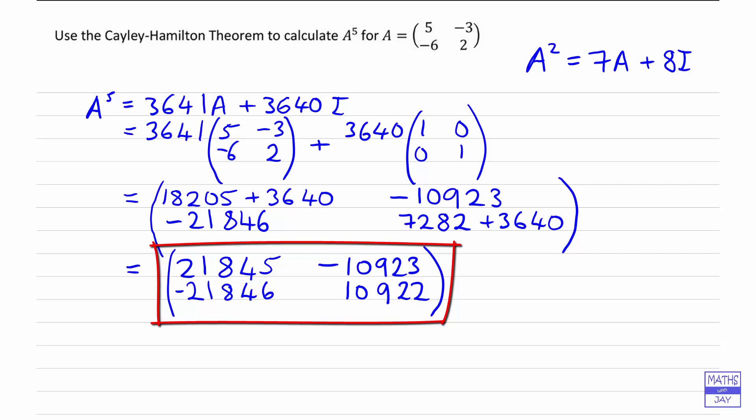But you can see, I hope, that you would be able to work out A to the power of any whole number. It's also worth bearing in mind that we could take our A² formula and think of it as... we could write it like this: A^n must be equal to... what I'm doing is multiplying through by A^(n-2). So that must be equal to 7 times A^(n-1) plus 8A^(n-2).